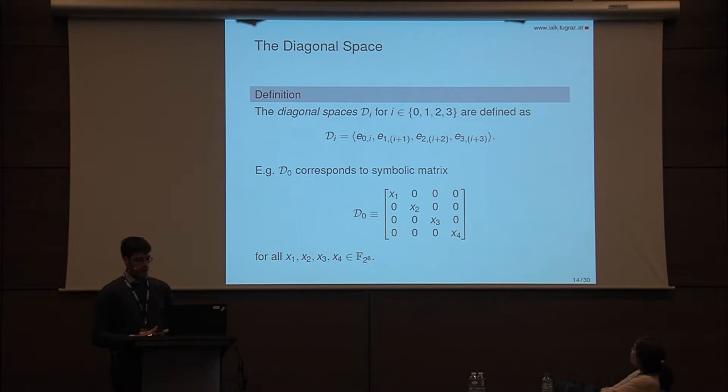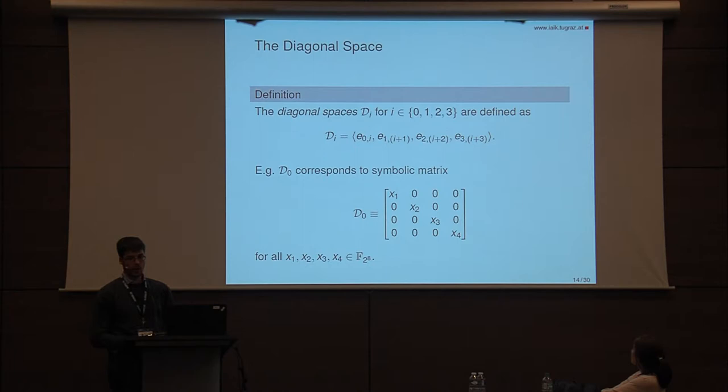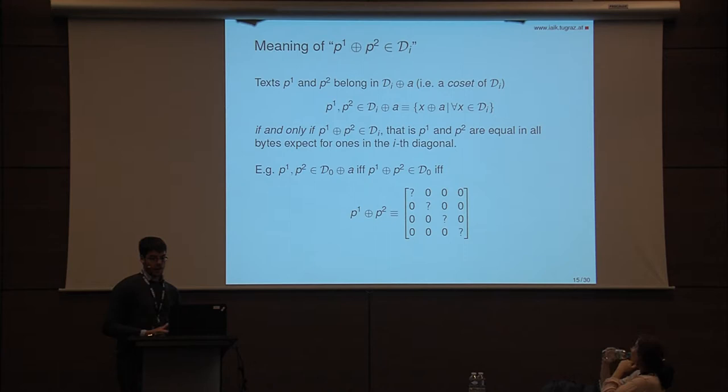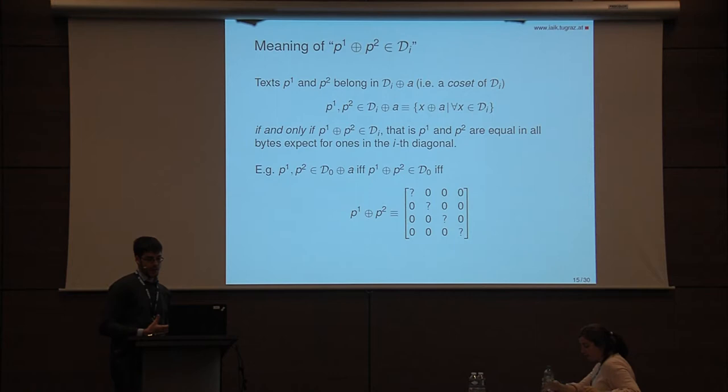The diagonal space is defined as the space of all matrices given by linear combinations of four matrices, where E_{j,i} is the matrix with all elements equal to zero except for the one in row j and column i. This is the example for D_0, where we have all matrices with all elements equal to zero except for the ones in the first diagonal. Two elements belong to the same coset of diagonal space D_i if and only if their difference belongs to subspace D_i, meaning the two texts are equal in all bytes except for the ones in the i-th diagonal.